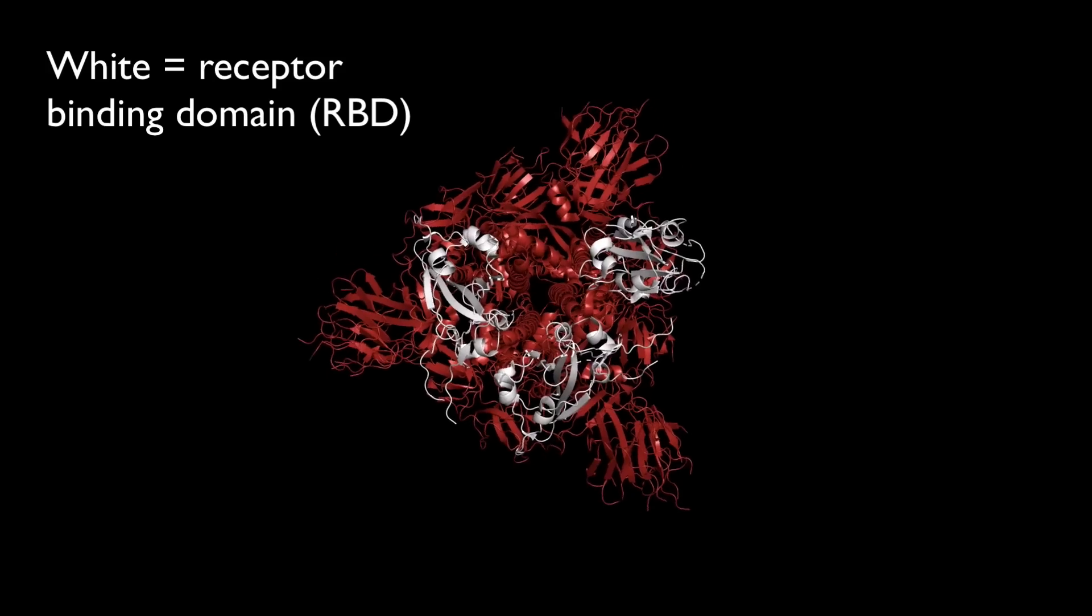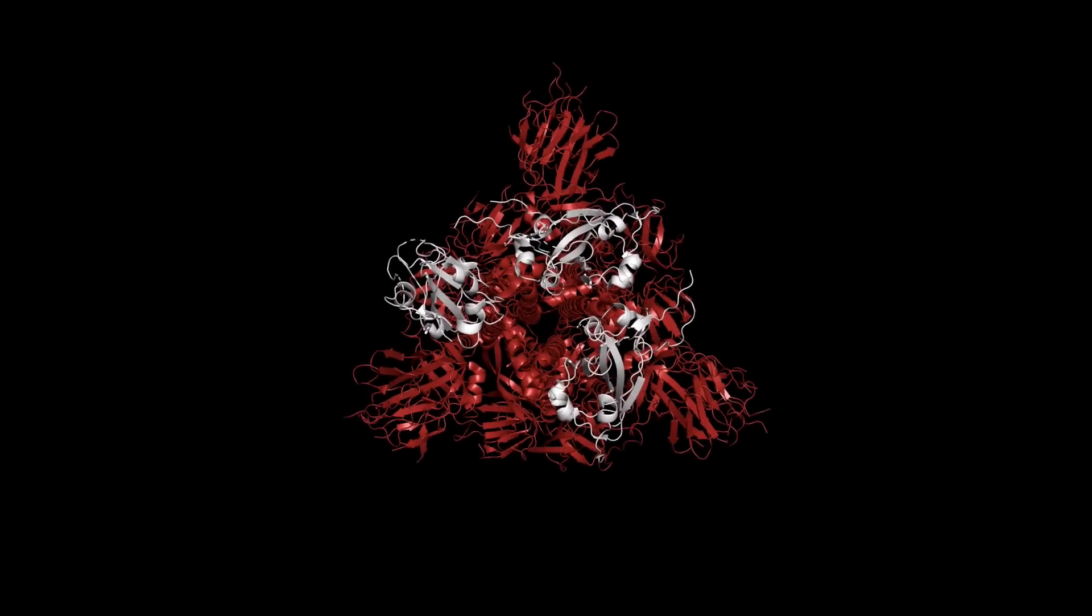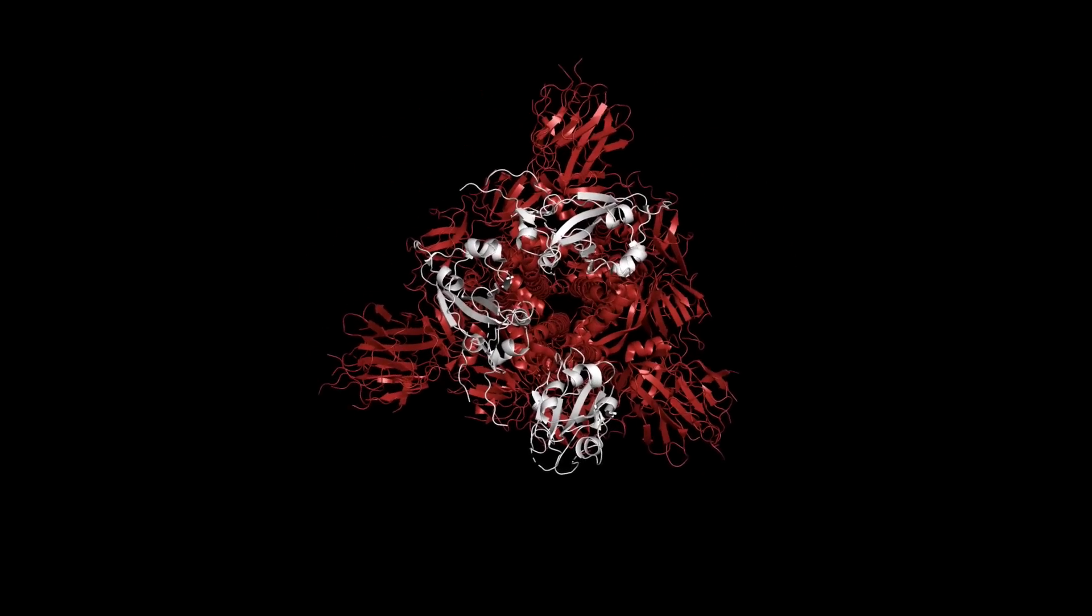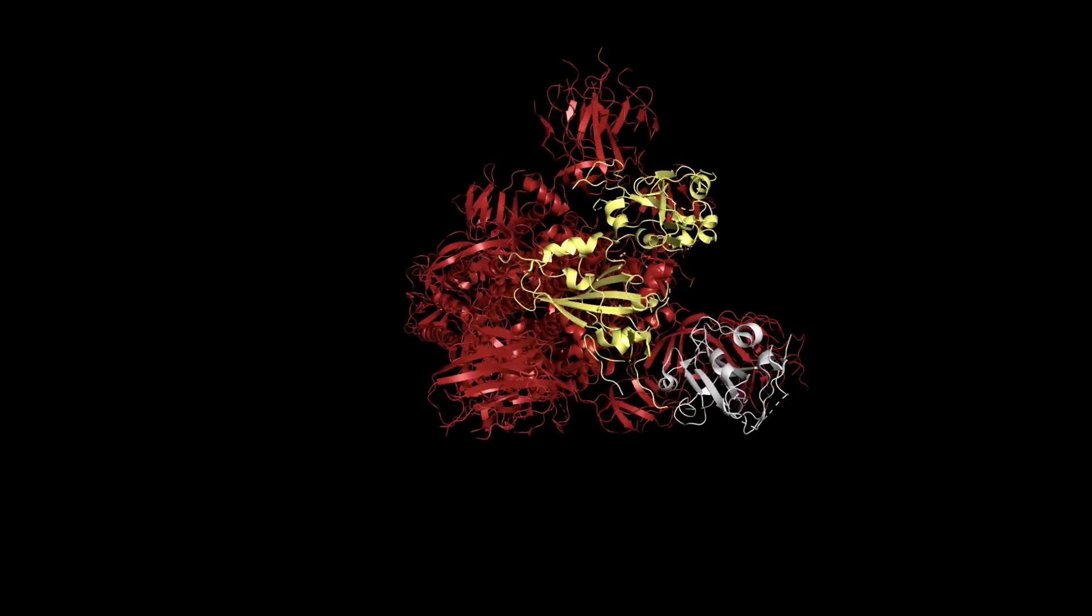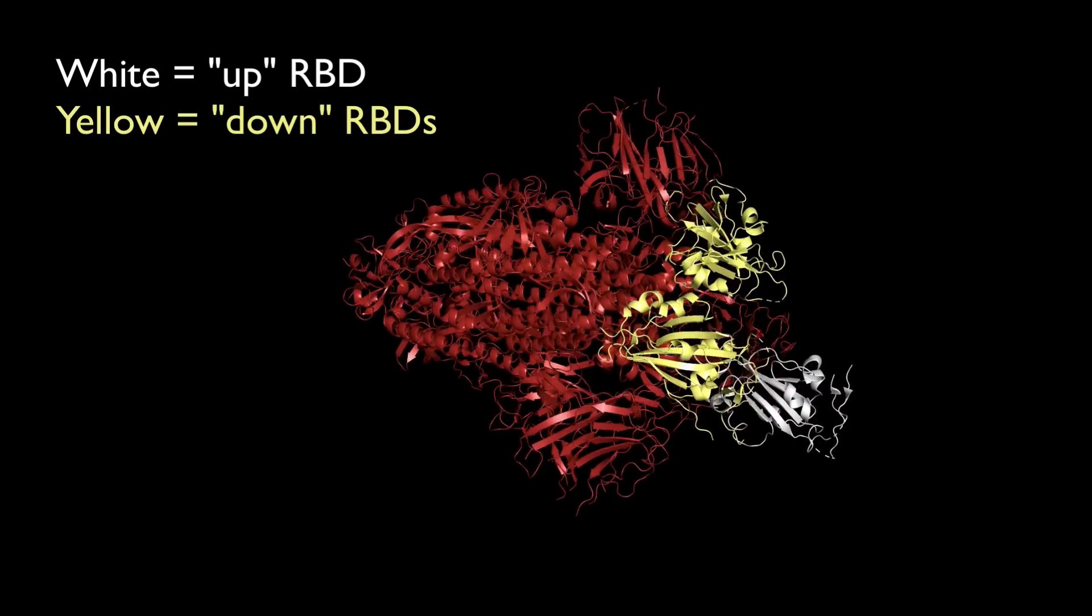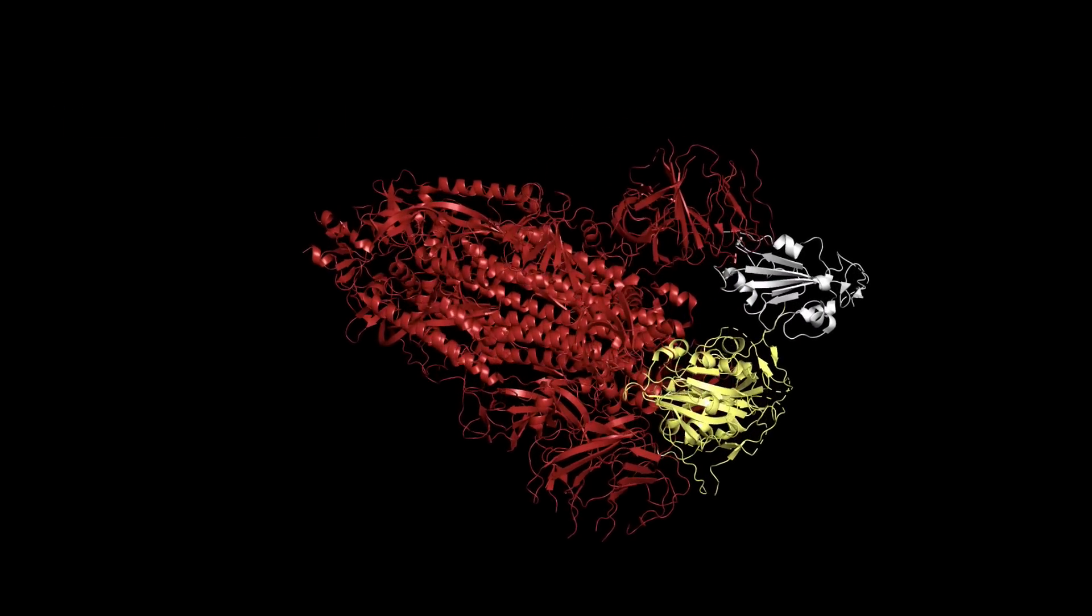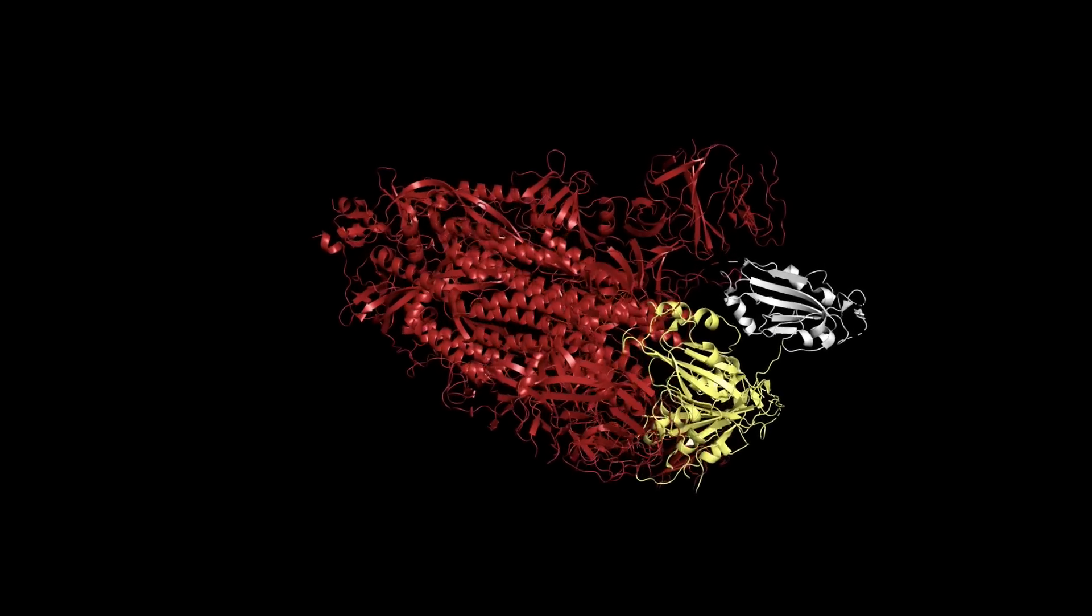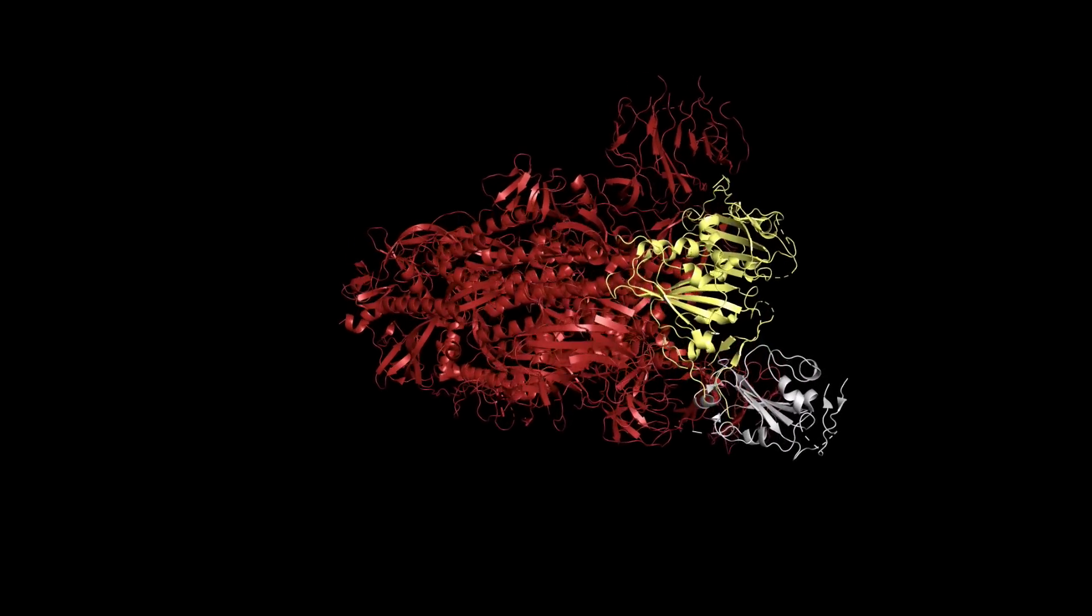The RBD is where this virus binds to an enzyme on the host cell's surface, enabling it to fuse with the cell and transport viral genetic material inside. Two of these RBDs are in a down conformation in this structure. Let's color these yellow. However, one of these RBDs is flipped up. This up conformation is higher energy, poised to bind to the cellular receptor and result in fusion. It's thought that when the spike protein binds, each of these RBDs shifts into this less stable up conformation.